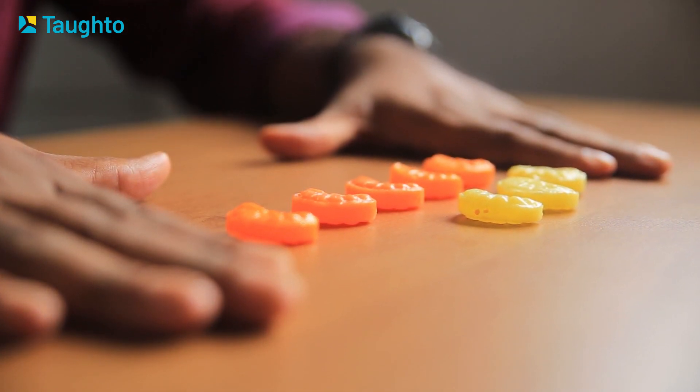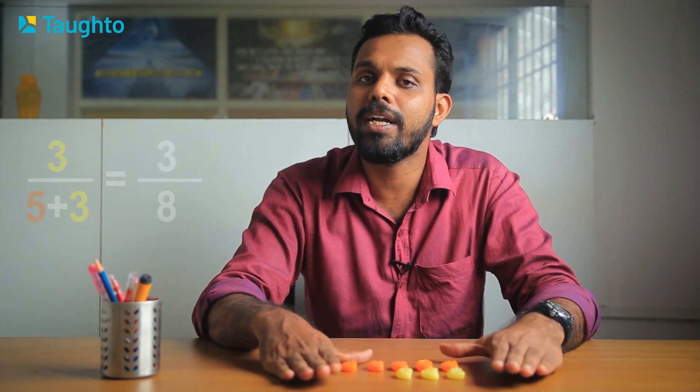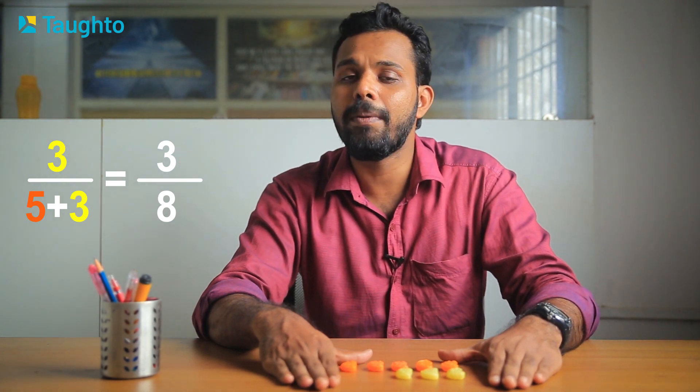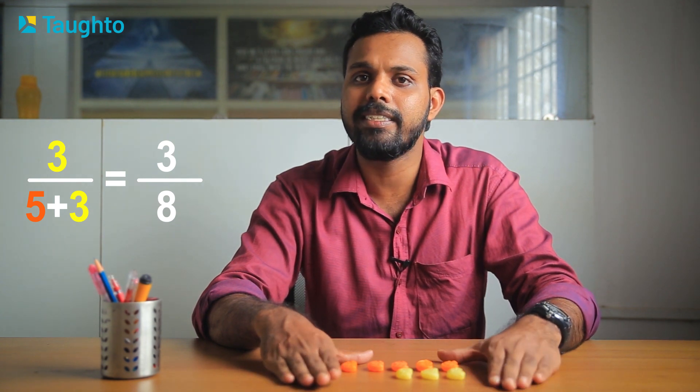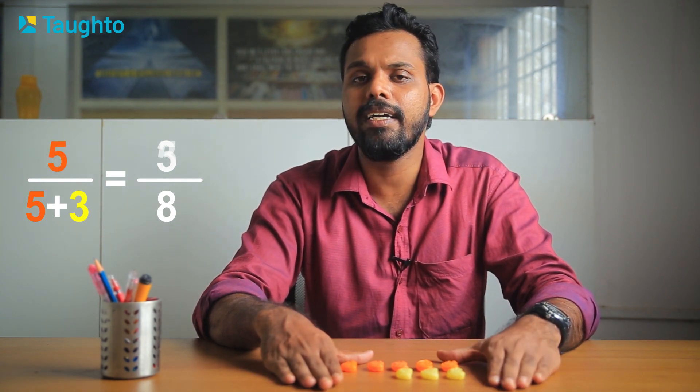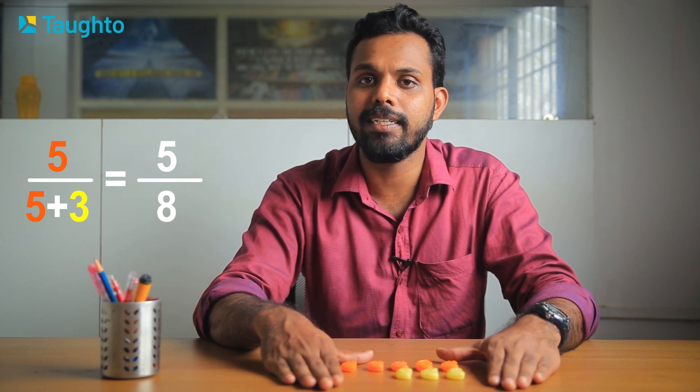Now we have 8 balls in our hands — 5 are orange and 3 are yellow. If we pick one, what is the probability of getting an orange ball? There are 5 orange balls out of 8 total, so the probability is five by eight.